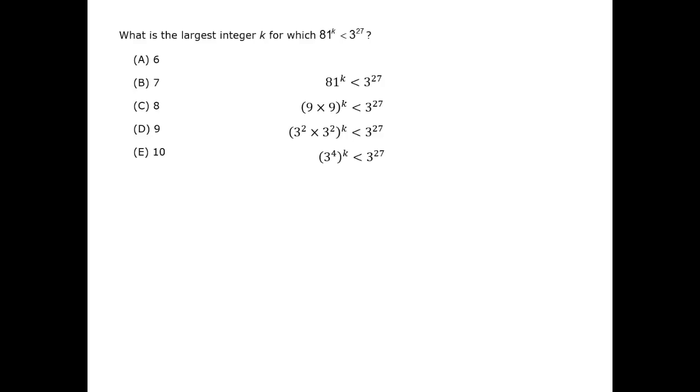81, in other words, is 3 to the 4th, and 81 to the k power is 3 to the 4th power to the k power. An exponent of an exponent multiplies, so we are told, in essence, that 3 to the 4k power is less than 3 to the 27th power.